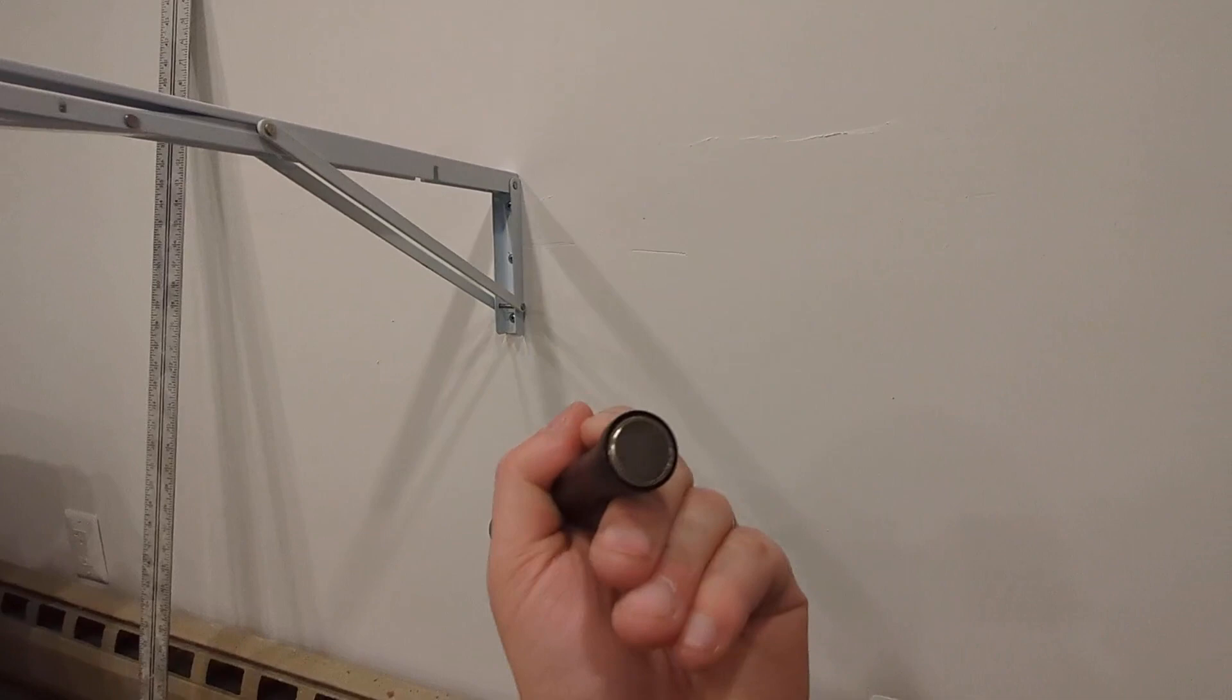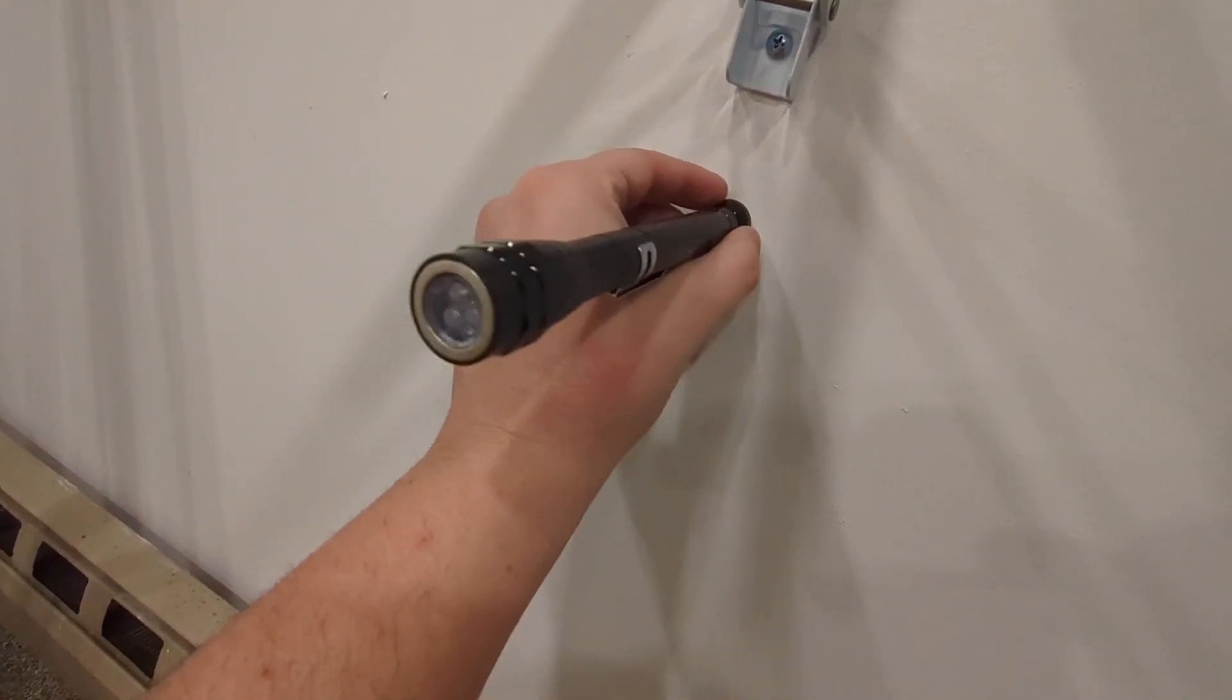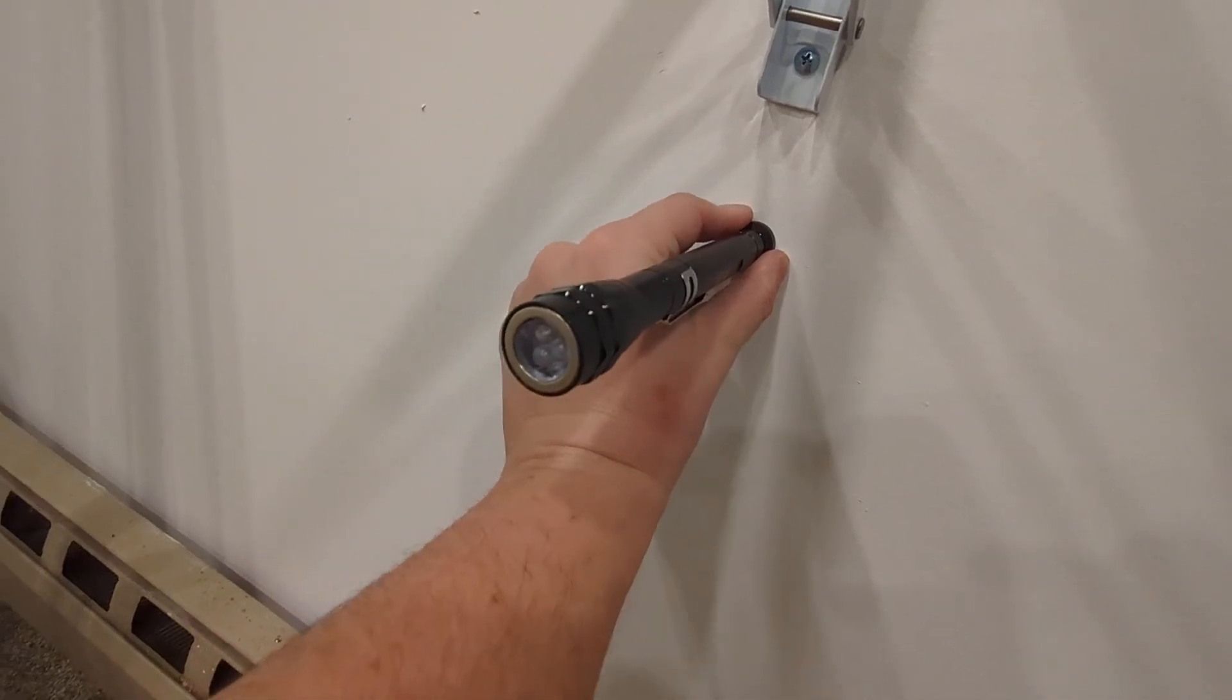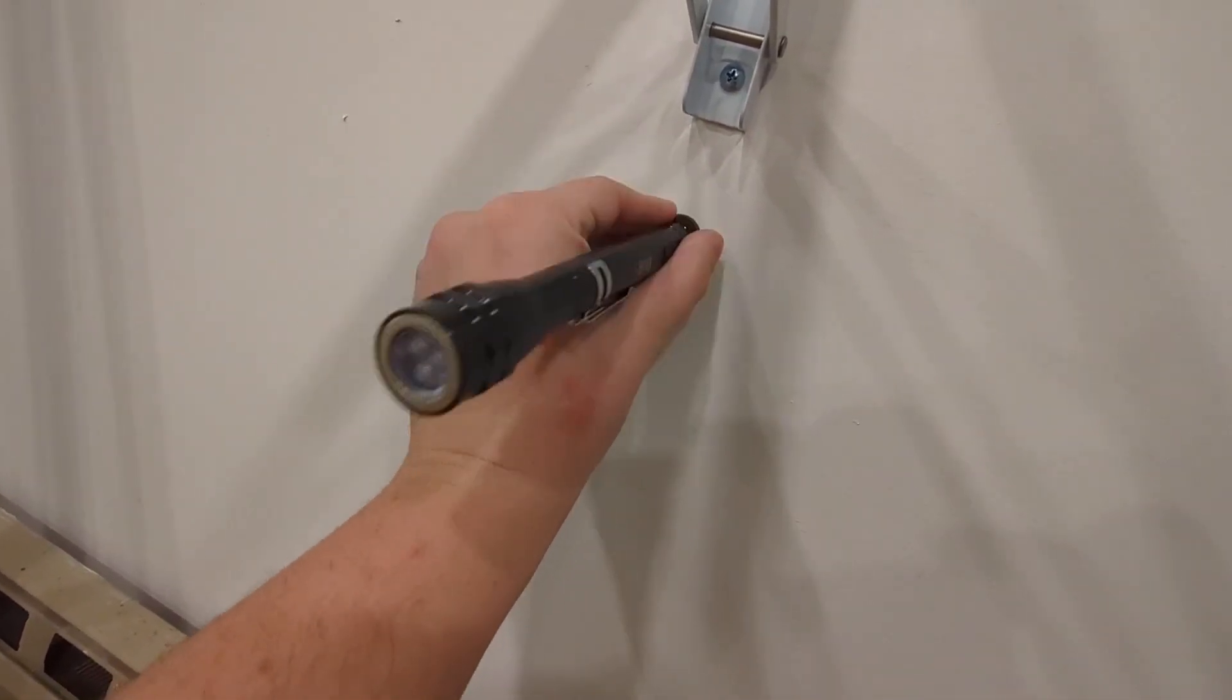How I did that was I took a magnet - doesn't matter which kind - and I basically just found the screws that attach the drywall to the stud. That'll tell you where the stud is.